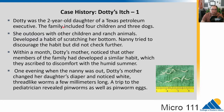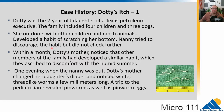Let's do a case study. We have Dottie — she's two years old, the daughter of a petroleum executive. The family includes four children and three dogs, and she likes to play outside with the other children and animals on their ranch. She develops the habit of scratching her bottom. Within a month, her mother notices other members of the family also have an itch down there, thinking it might just be the hot, humid summer. But one evening, the mother is changing the daughter's diaper and notices white thread-like worms in her feces, several millimeters long.